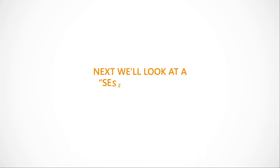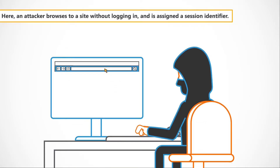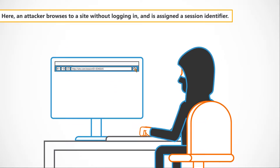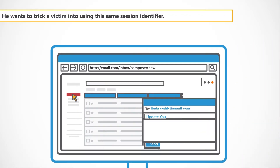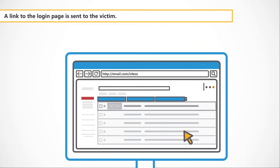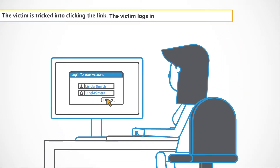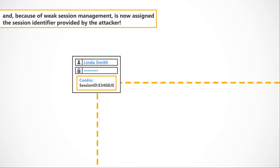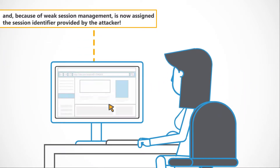Next, we'll look at a session fixation example. Here, an attacker browses to a site without logging in and is assigned a session identifier. He wants to trick a victim into using this same session identifier. A link to the login page is sent to the victim. The link contains the session identifier of the attacker. The victim is tricked into clicking the link. The victim logs in and, because of weak session management, is now assigned the session identifier provided by the attacker.